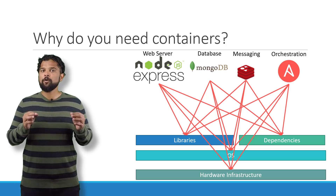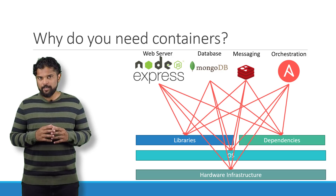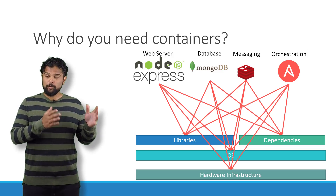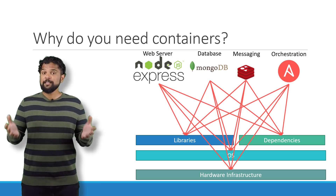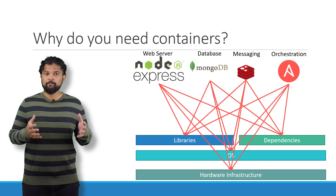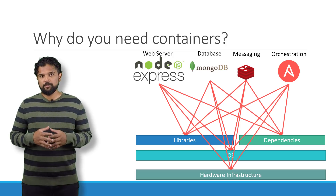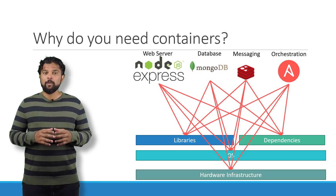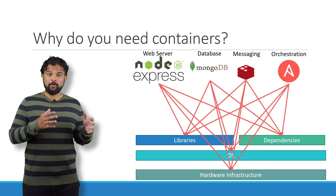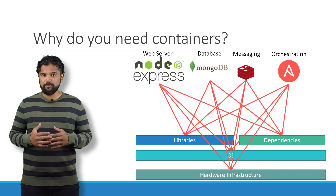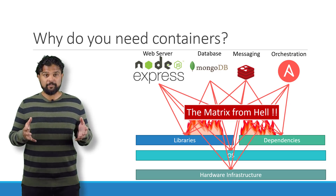Secondly, we had to check the compatibility between these services and the libraries and dependencies on the OS. We've had issues where one service requires one version of a dependent library, whereas another service required another version. The architecture of our application changed over time, and we've had to upgrade to newer versions of these components or change the database. Every time something changed, we had to go through the same process of checking compatibility between these various components and the underlying infrastructure. This compatibility matrix issue is usually referred to as the matrix from hell.